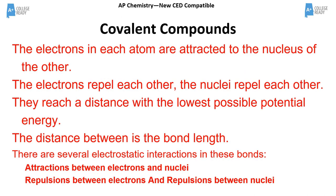Covalent compounds are where we spend a lot of time — drawing Lewis structures and doing formal charge. In covalent compounds, electrons are shared, again to achieve noble gas configuration. We can describe the distance between nuclei where repulsion is balanced by attraction; we call that the bond length. We can also talk about bond energy for covalent compounds, just like lattice energy for ionic ones.